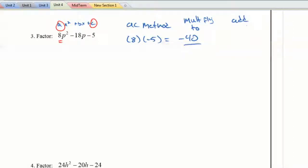and add to my middle term still, negative 18. So anyone think of anything off the top of their head that's going to work for that? 40, factors of 40. I can think of 4 and 10, 2 and 20, 1 and 40.